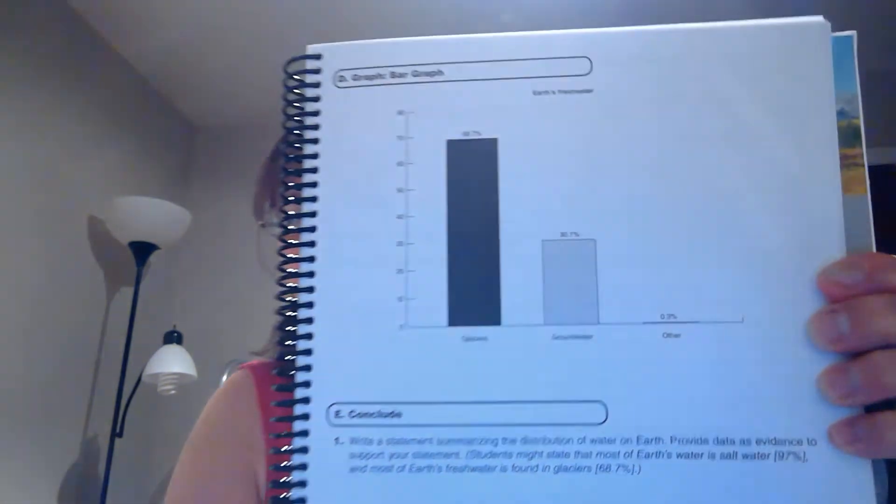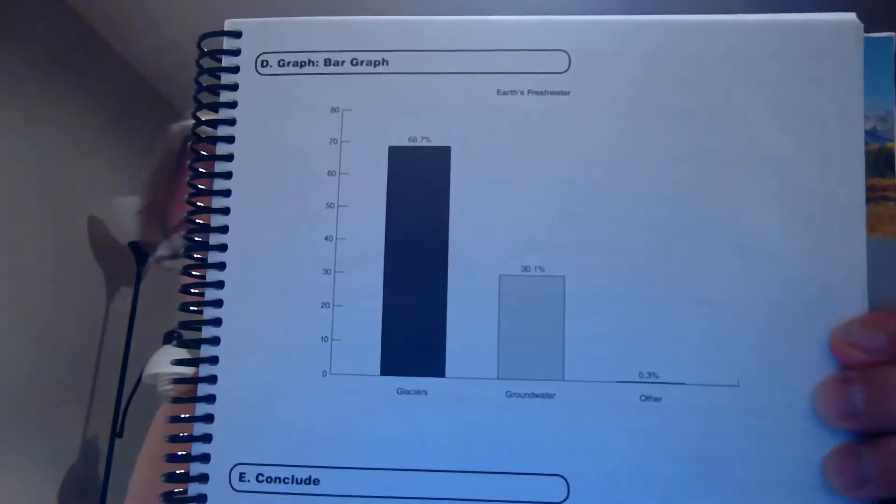Now, where is that water found? I have another graph shown as a bar graph. This bar graph will show you where that fresh water can be found.